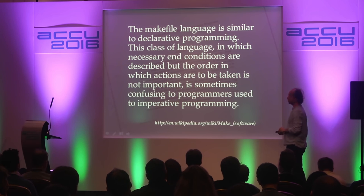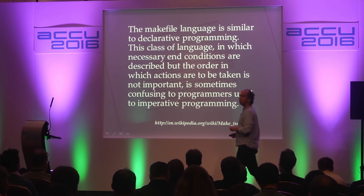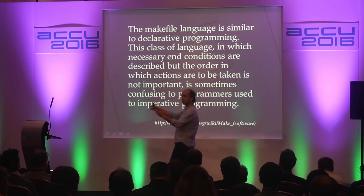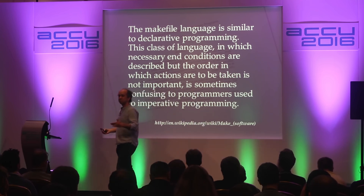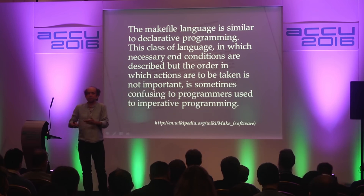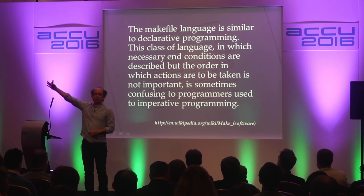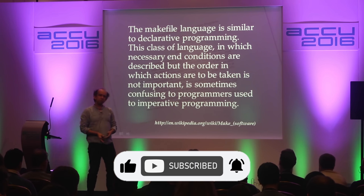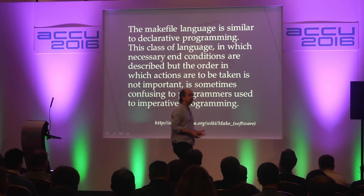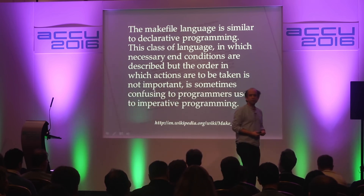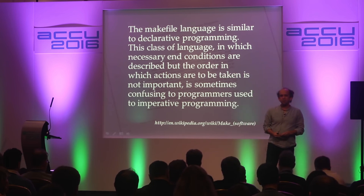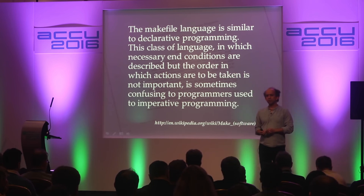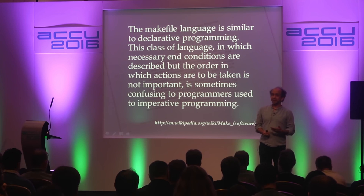It's sometimes confusing to programmers used to imperative programming. The idea is that you are stating some kind of intention — you say, this is where I want to be, you figure out the details. There's obviously a sliding scale; we don't just say there is imperative and there is declarative. But the idea is maybe if we move over towards intent — if you've ever tried to write a build file that is strictly imperative, you kind of fall asleep after a while. It's very boring.